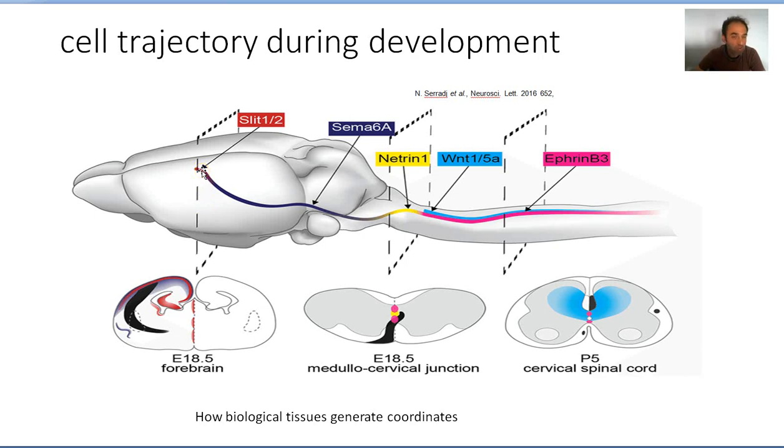More than 50 years ago and more, people started to understand that you need a notion of coordinates. How this neuron will interpret the coordinates and find, ultimately, their final position.